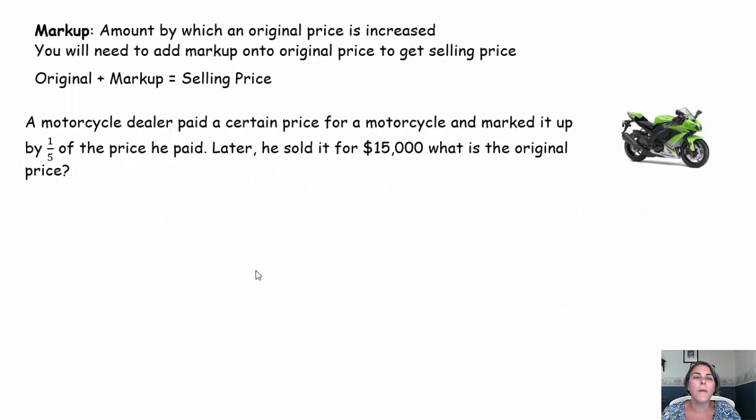Now let's talk about markup. Markup is an amount by which an original price is increased. You'll need to add a markup to the original price to get your selling price. So stores or car companies pay an original amount for their item. They then increase the amount that they're going to sell the item for. They mark it up so that they can make a profit. So let's take a look at an example. A motorcycle dealer paid a certain price for a motorcycle and then he marked it up by one-fifth of that original price that he paid. He sold it for $15,000. What was the original price?